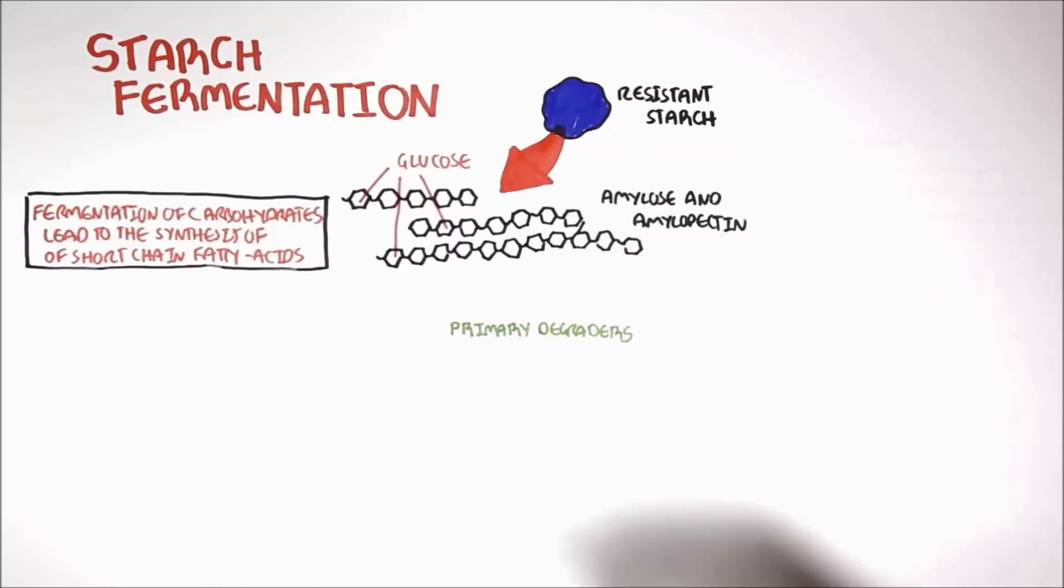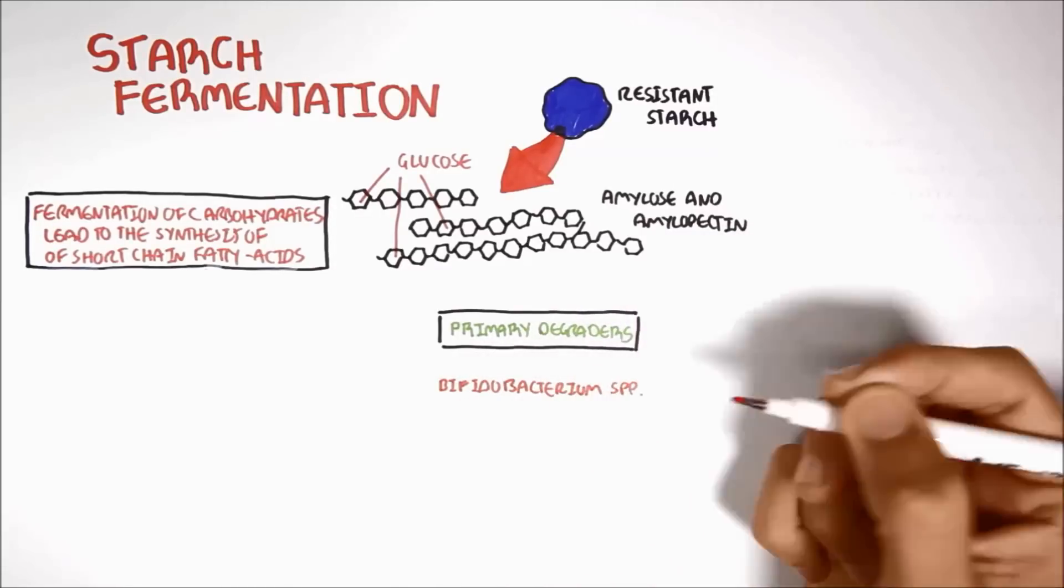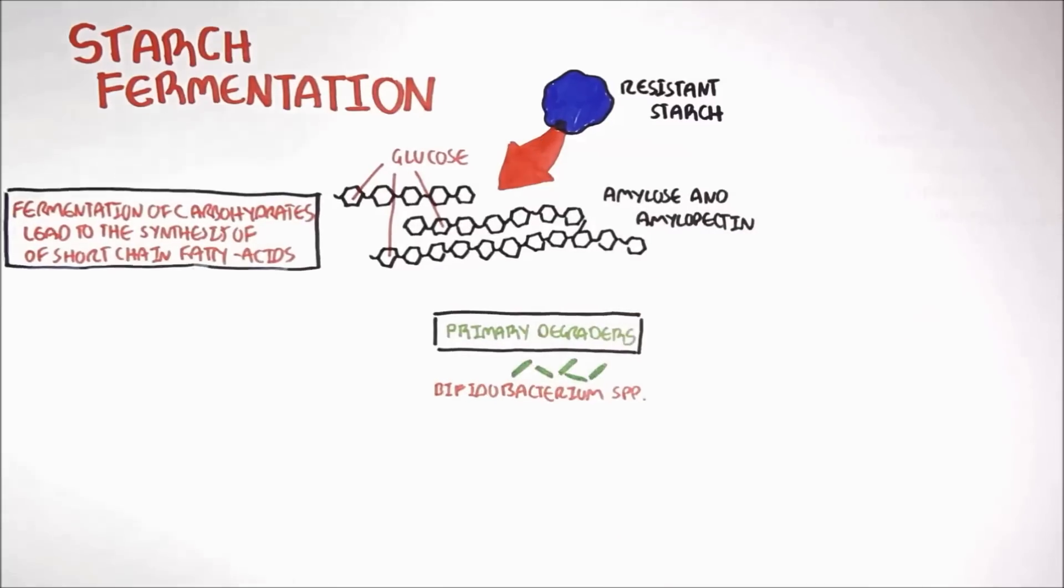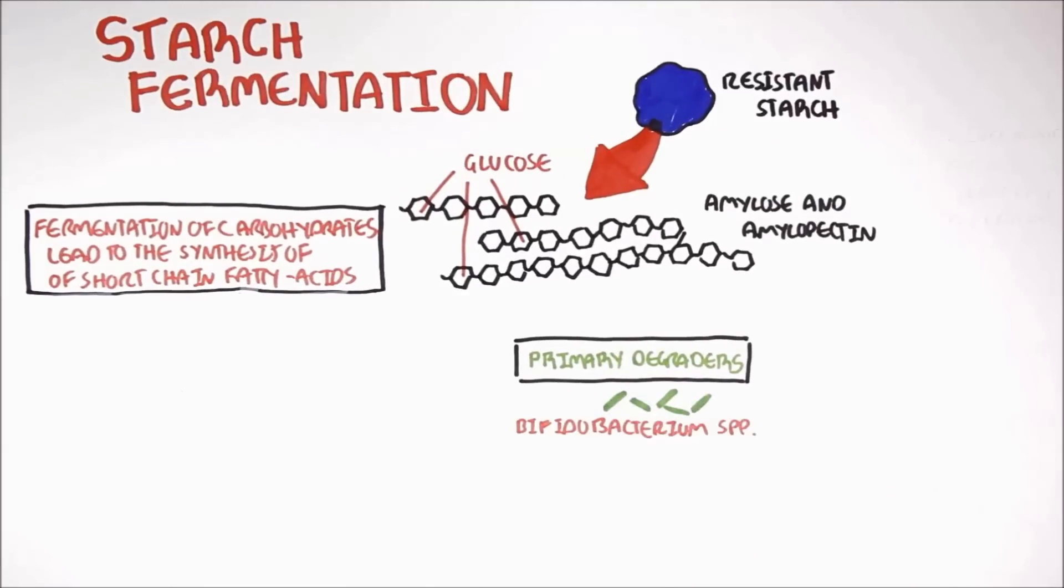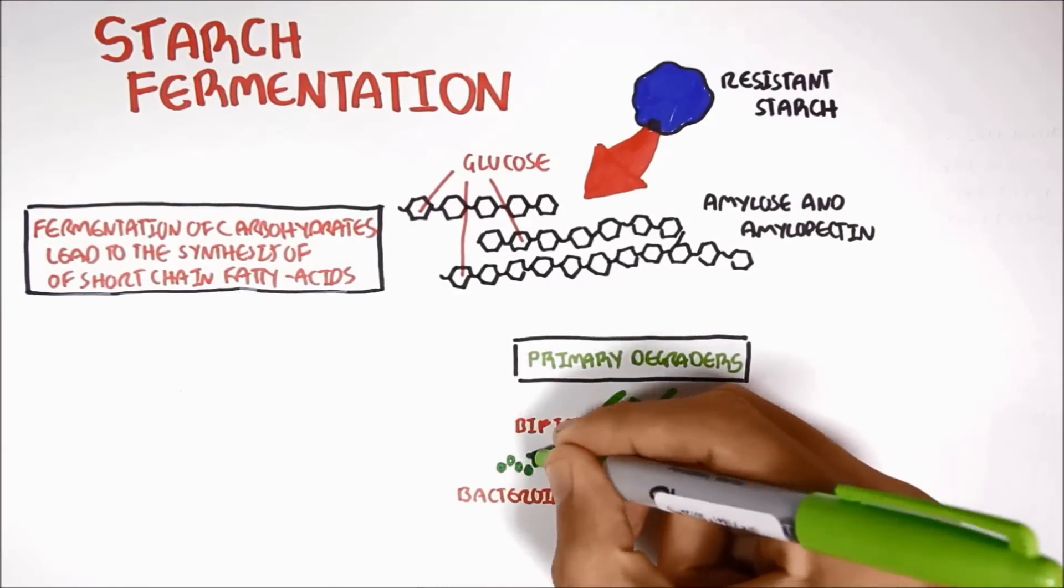Now, within the colon, you have primary degraders of resistant starch, such as Bifidobacterium species, Bacteroides species, and Ruminococcus bromii.